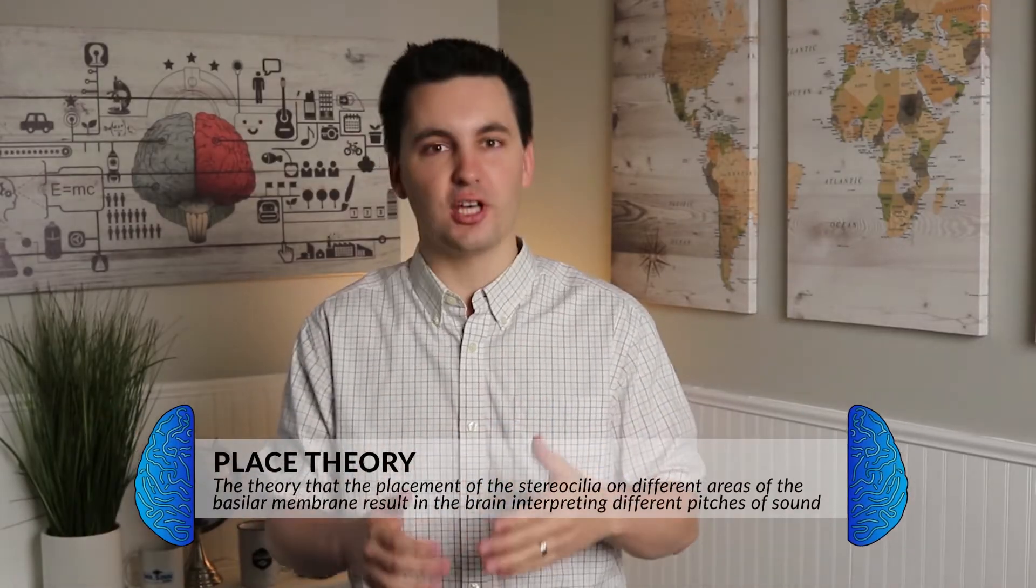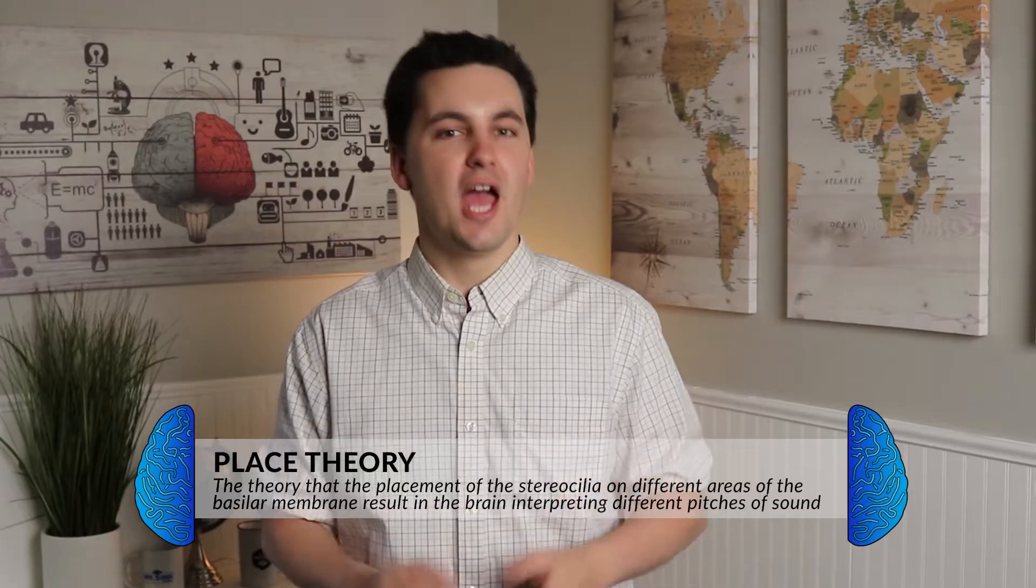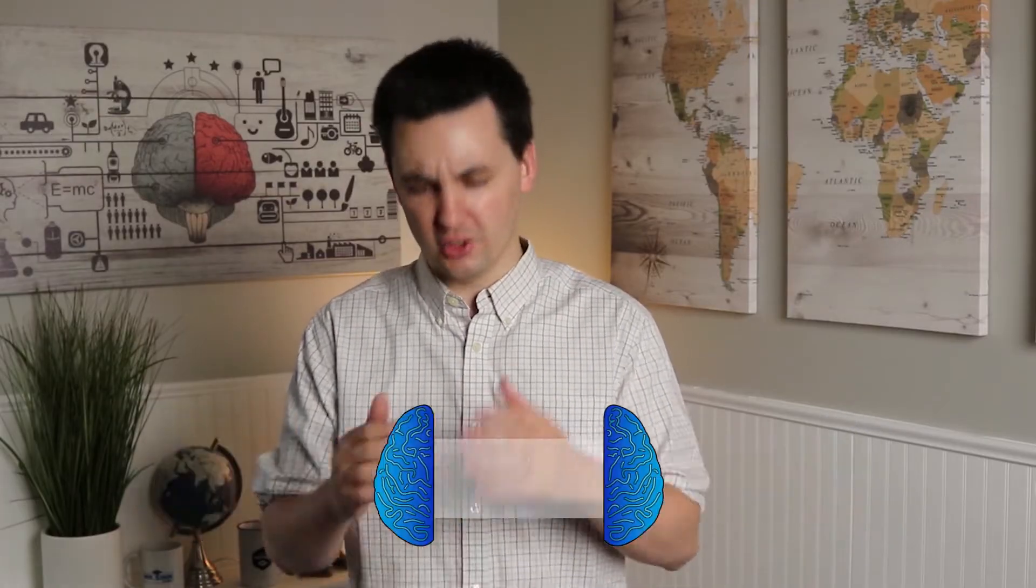So we've been talking about the basilar membrane and also the stereocilia, and I want to quickly talk about the idea that different parts of the basilar membrane and cilia are specific to different frequencies. This is known as the place theory. Certain hair cells respond to certain frequencies. Hair cells at the base of the cochlea can detect higher-pitched sounds. Hair cells near the top of the cochlea can detect lower-pitched sounds, with the hair cells at the very top near the spiral detecting the lowest pitch of sound.